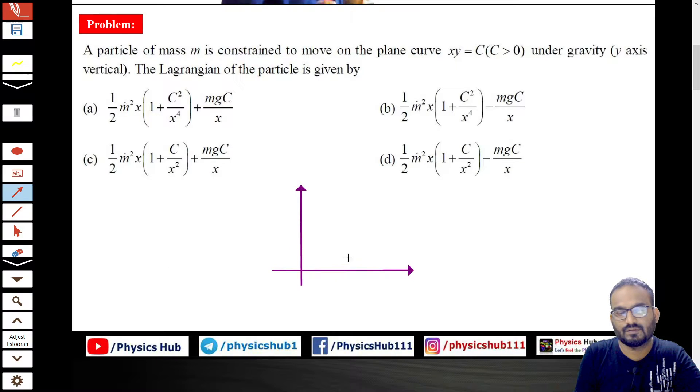So this is the x-axis, this is the y-axis. If this is so, your xy curve will be looking like this. It will look like this. You must have seen pv = constant curve. This is something like that.